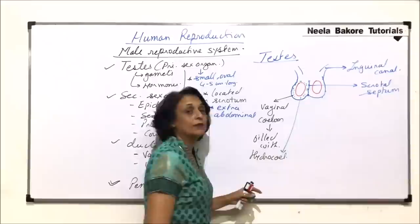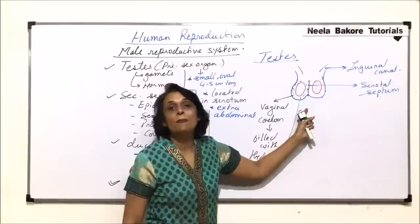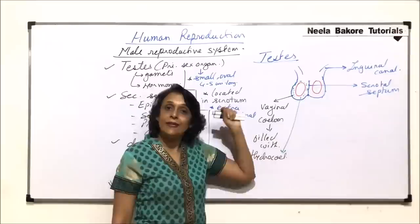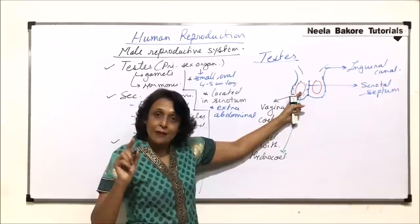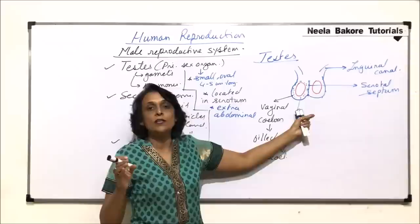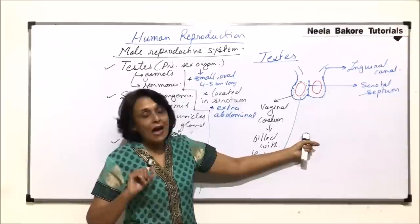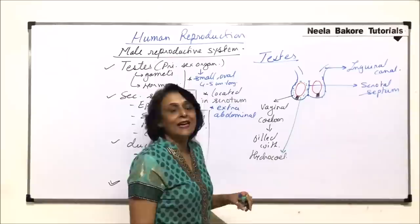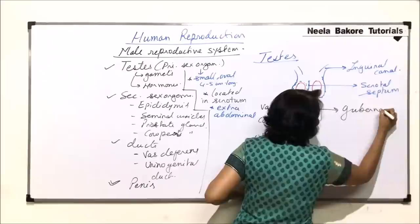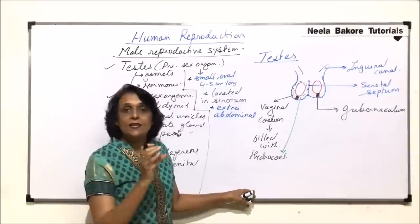The testicles are formed in the embryonic stage and descend later on. When the male fetus is developing, the testes are formed in the abdominal cavity while the scrotal sac is empty. During embryonic development, the testes descend into the scrotal sac and are fixed there with the help of a fibrous band known as the gubernaculum.